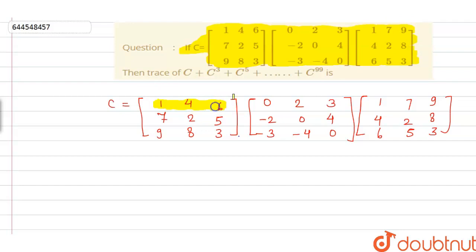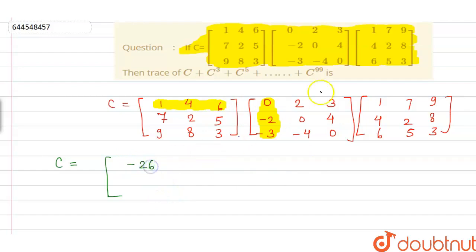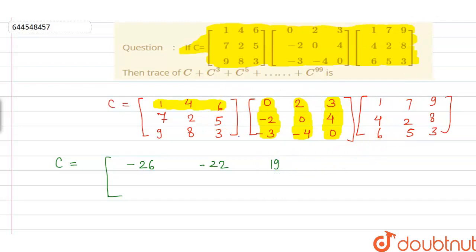The rule for multiplication of two matrices is to multiply the first row of the first matrix with the first column of the second matrix. This gives 1×0 + 4×(-2) + 6×(-3) = -8 - 18 = -26. Multiplying the first row with the second column gives 1×2 + 0 + 6×(-4) = -22. Multiplying the first row with the third column gives 3 + 16 = 19.